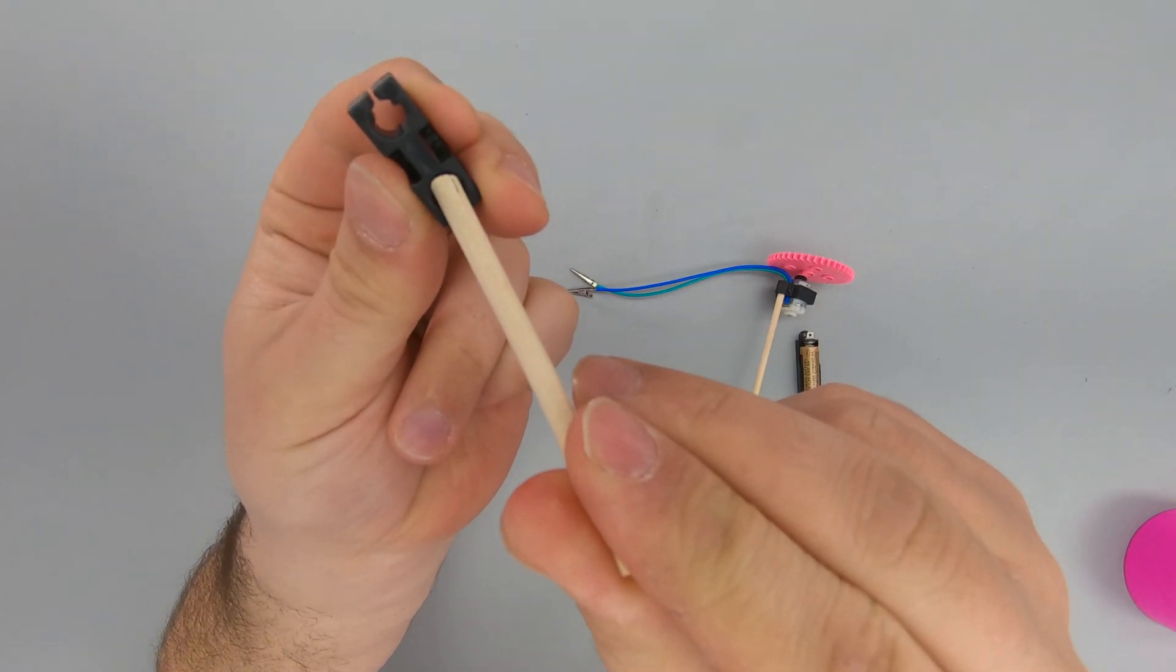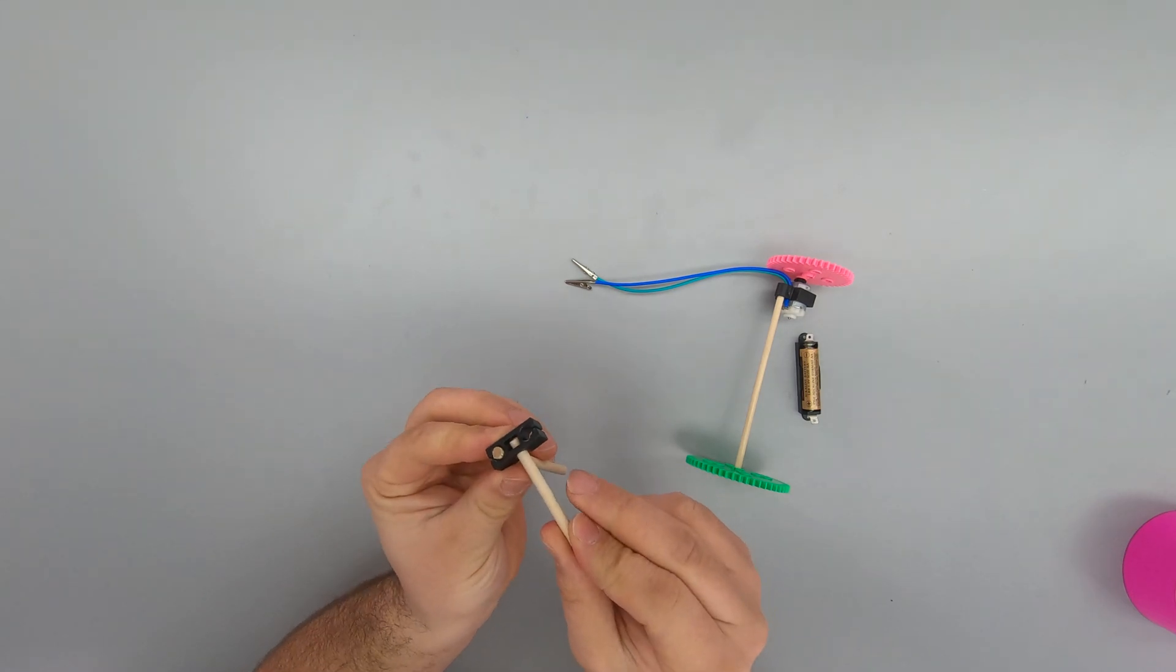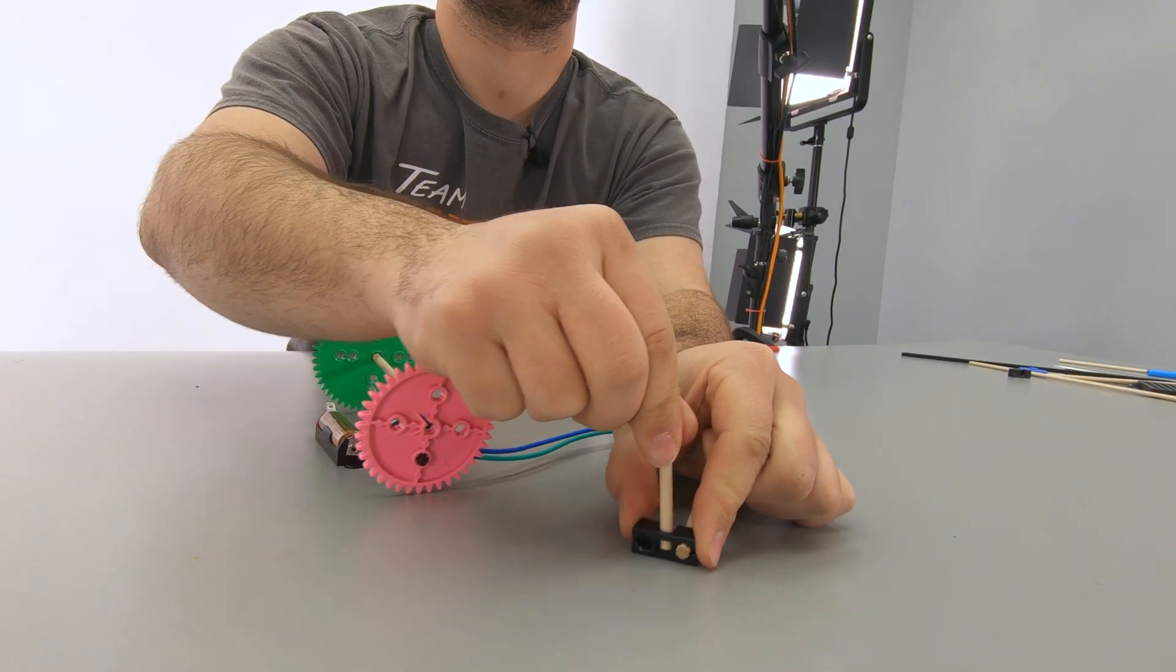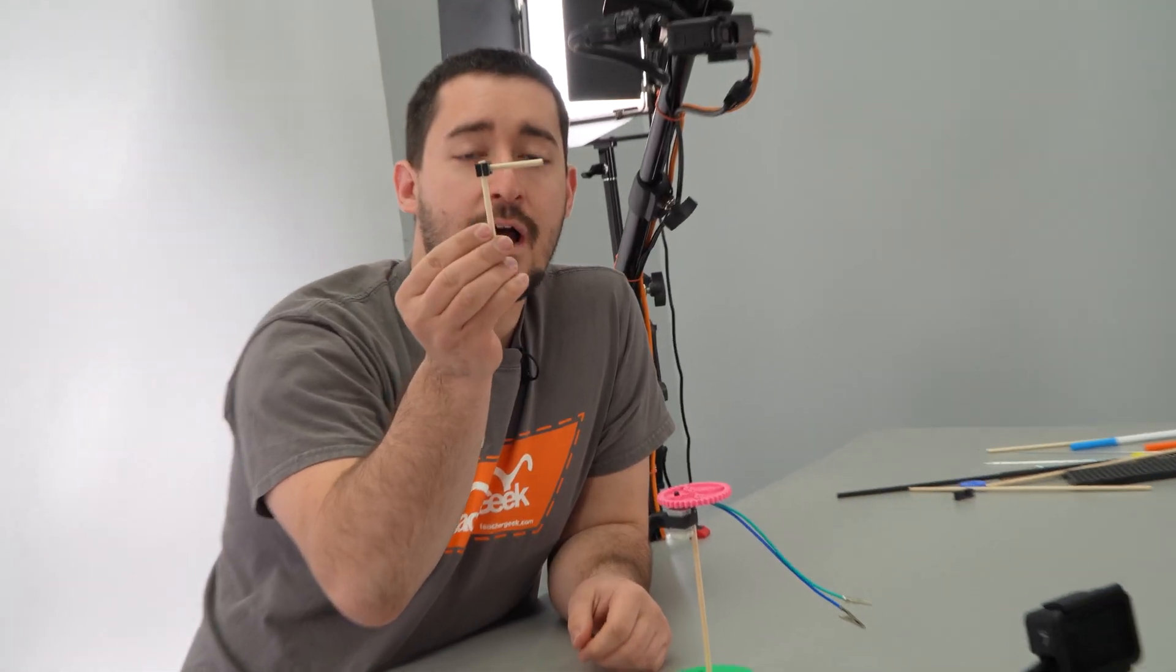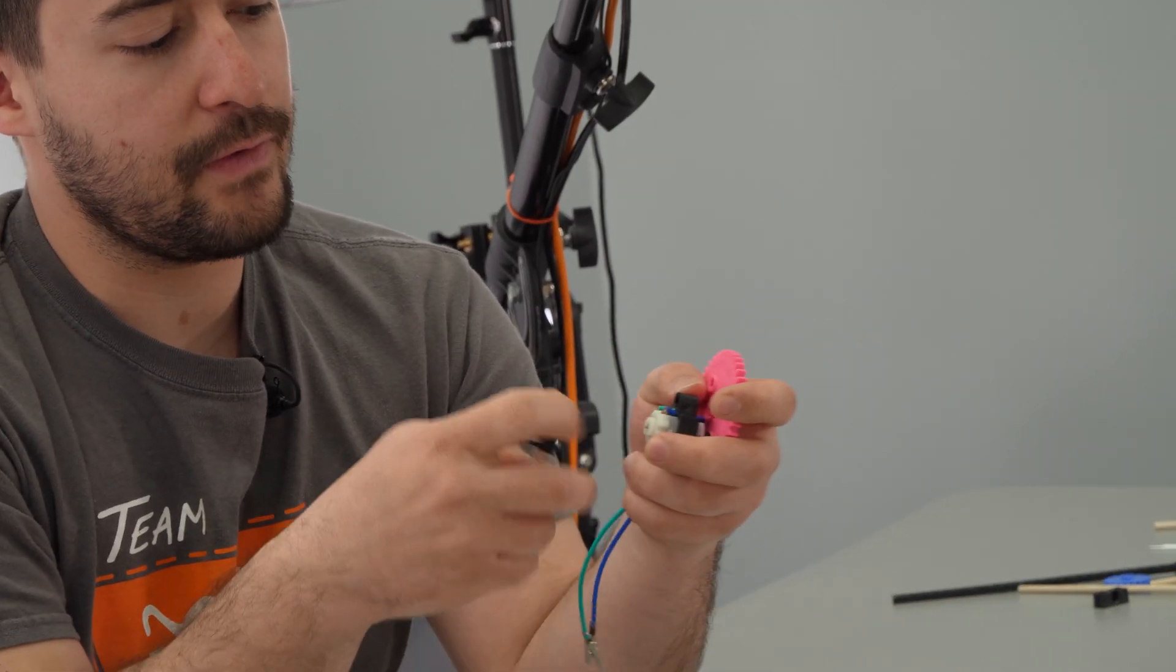With a perpendicular block, you can get your dowels to form a right angle so that your gear rotates vertically instead of horizontally. Push or wiggle a dowel into one of the two top holes, and then wiggle a dowel into the side hole. Now my dowels form a right angle so I can rebuild this with the motor going vertically.